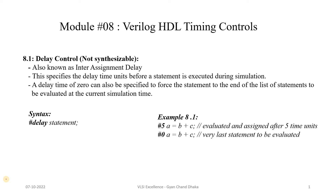Now let's get started. The first type of timing control statement in Verilog is the delayed control statement, also known as inter-assignment delay. The inter-assignment delay specifies the delay time units before a statement is executed during simulation — basically, it specifies after how much time those statements are going to be executed.